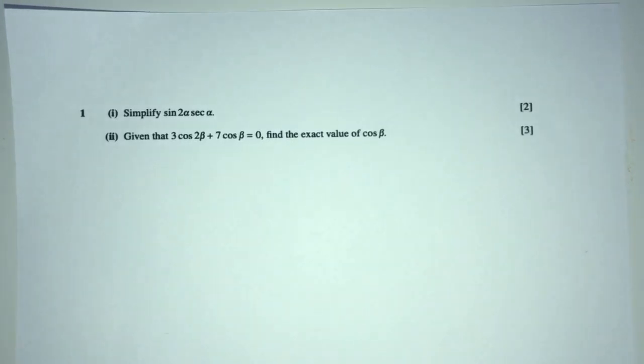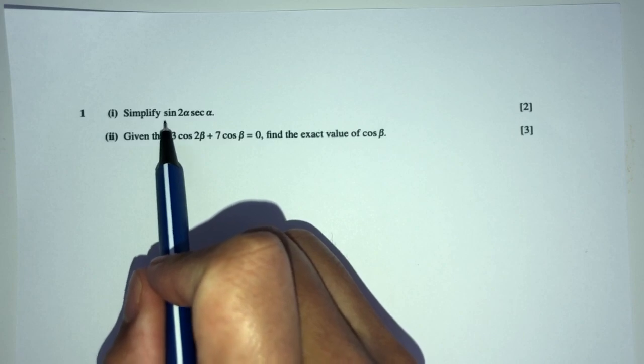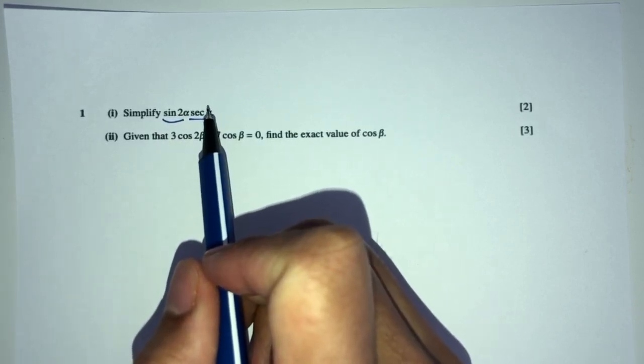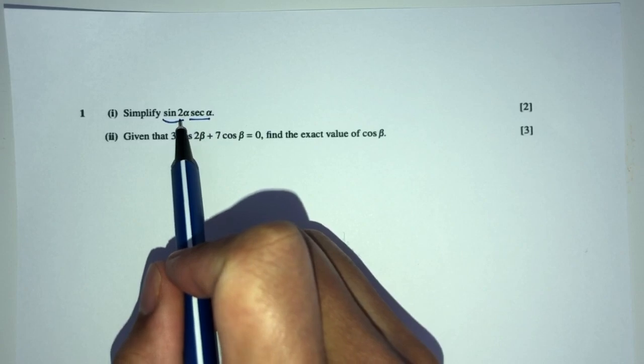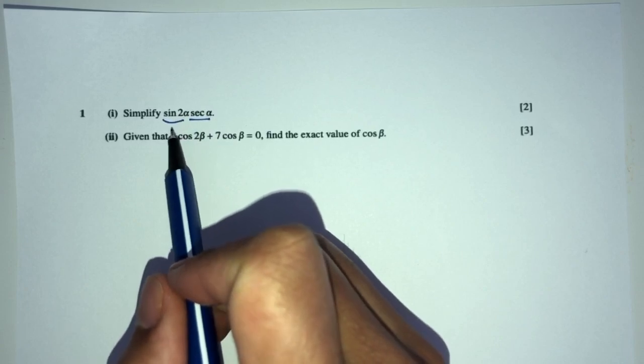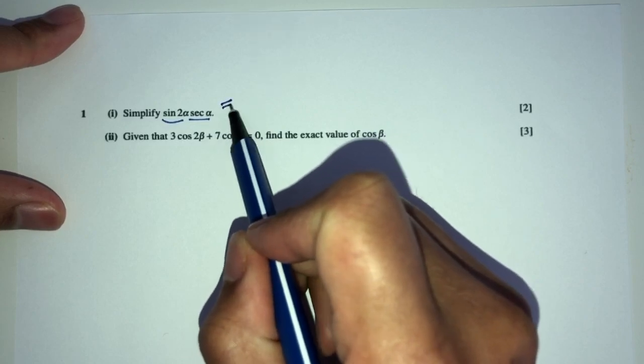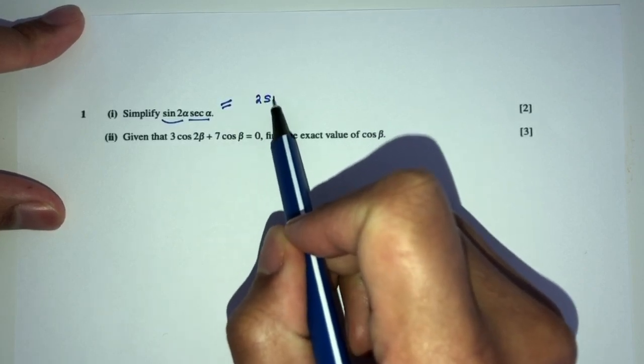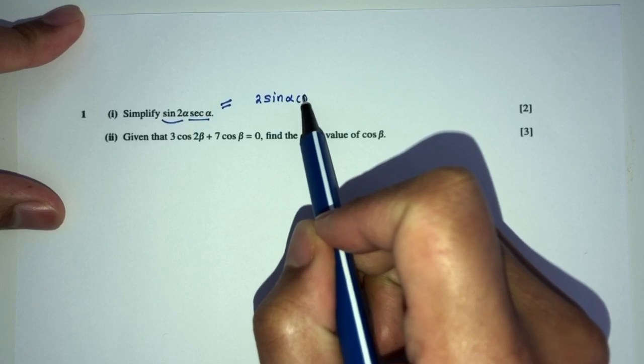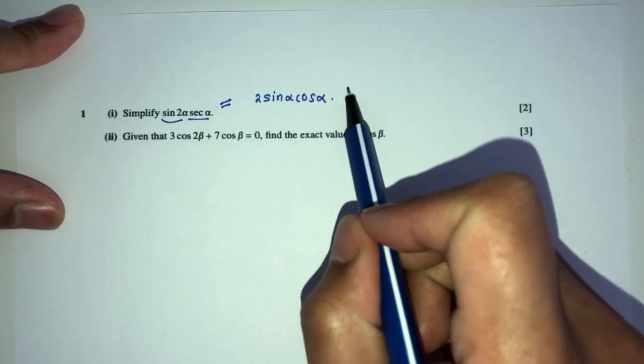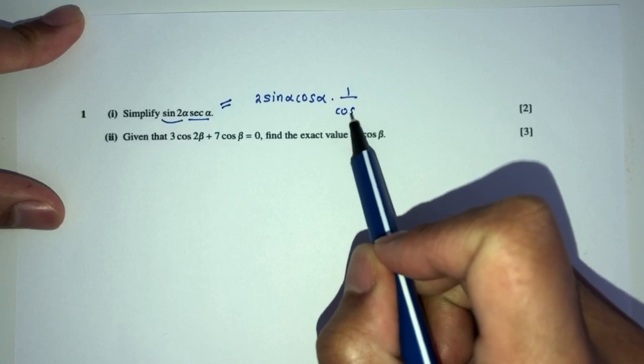Now let's move on to question number 1. So here we have to simplify this thing over here. First thing first, we see here we have sine of 2α, so it is double angle. We can break this down further. That will be 2 sin α cos α. Now what is sec? Sec is 1 over cos α.